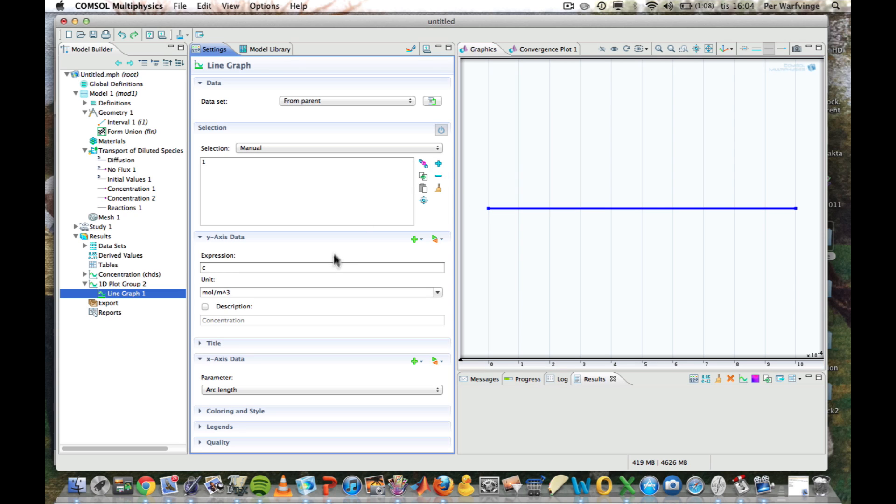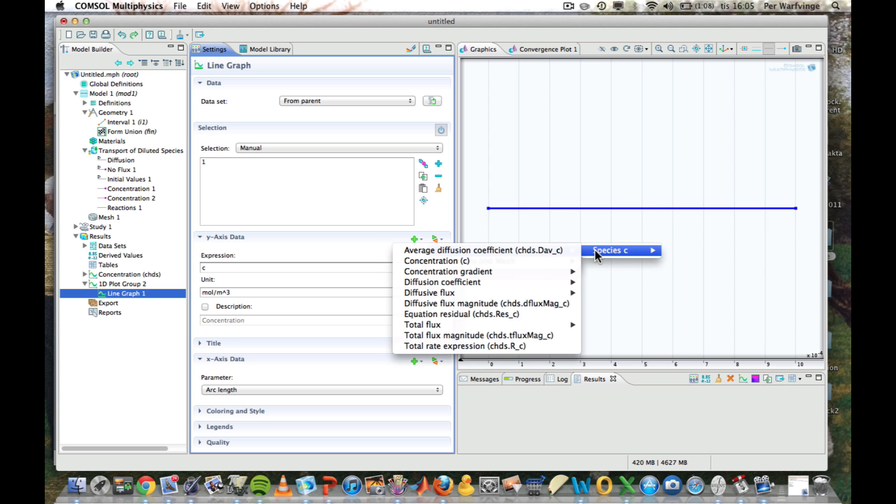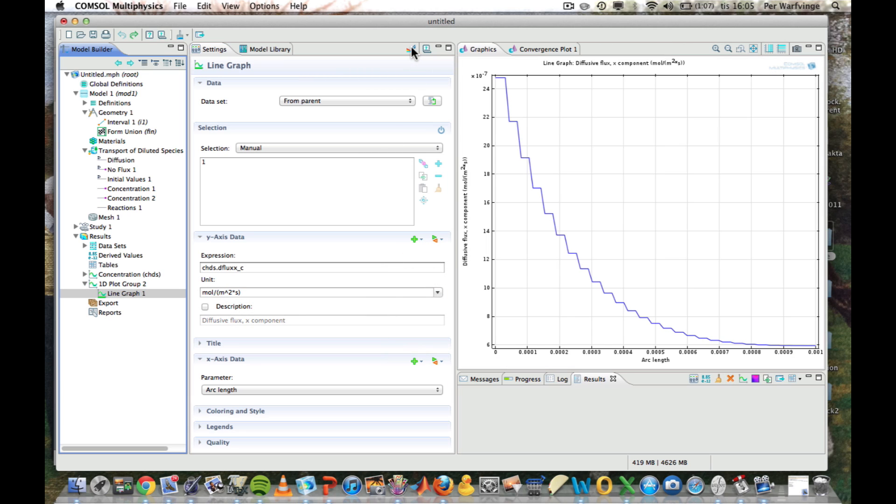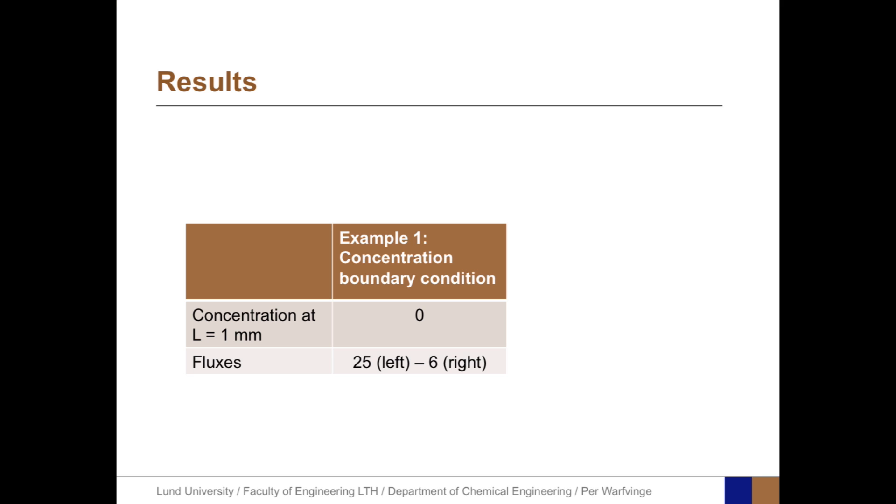We add that manually. And up here, we can select that we want to do something with species C, a diffusive flux. We want to look in the x direction. Having defined the plot, we plot it as about 25 to the left and about 6 to the right. And here we have the results.